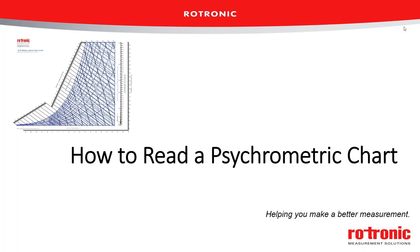If you have not downloaded your psychrometric chart and printed it out, I encourage you to do that now. This is an interactive exercise — it'll be the most fun and you'll get the most out of it if you have a chart in front of you with a pencil and a ruler. Look for the handouts section in your control panel. There are two charts — IP and SI units. We'll be using the IP chart.